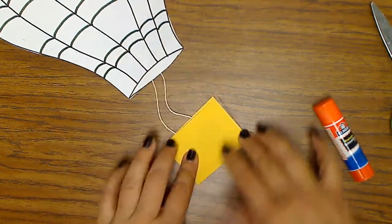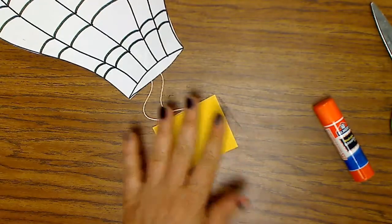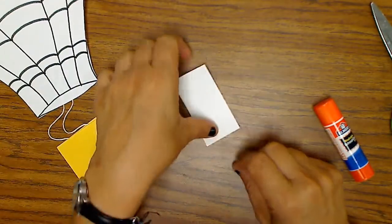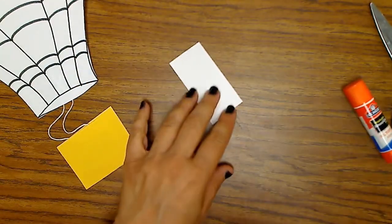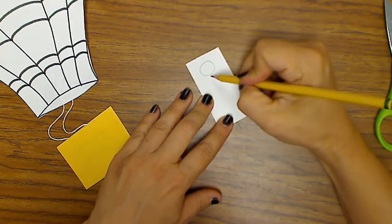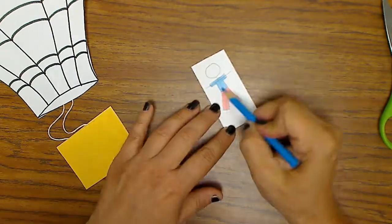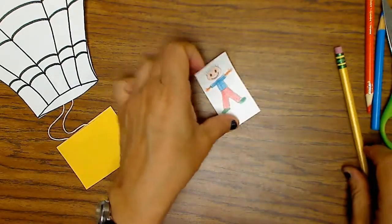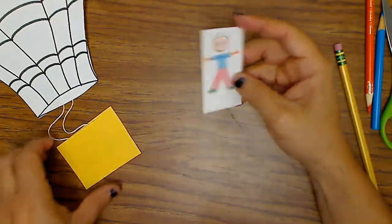We're going to move on to the person now. You're going to get a little piece of paper like this and you can just draw your person - if you want to draw a stick person, that's okay.